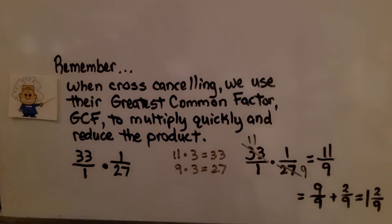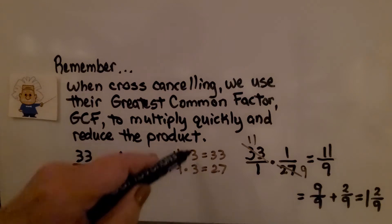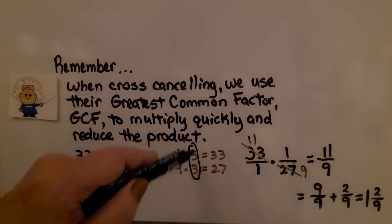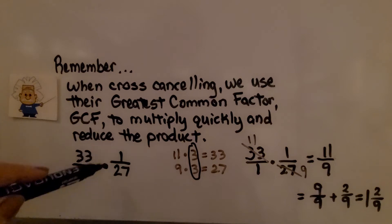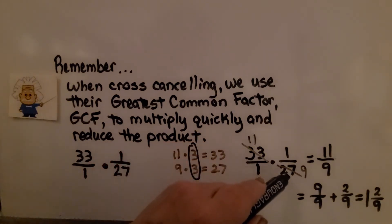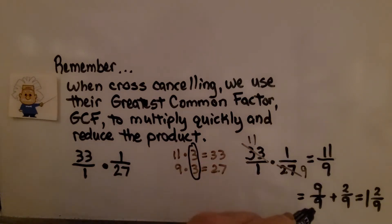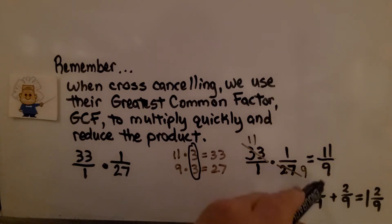Remember, when cross-canceling, we use the greatest common factor — the GCF — to multiply quickly and reduce the product. We know 11 times 3 is 33 and 9 times 3 is 27, so the greatest common factor will be a 3. We cross them out: we have 11 threes here and 9 threes here. We get 11 ninths, and that simplifies to 9 ninths plus 2 ninths — same numerator and denominator is one whole — so we have 1 and 2 ninths.